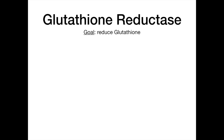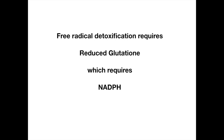Free radical detoxification requires reduced glutathione. So in the glutathione pathway, the goal of reducing glutathione is to be able to process and detoxify free radicals and peroxides. Free radical detoxification requires reduced glutathione, and in this pathway I'll show you how we actually reduce that glutathione—which requires NADPH from the HMP shunt. That is why all of these pathways are tied together.